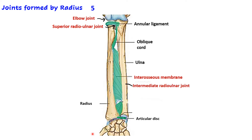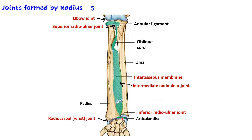The superior radio-ulnar joint is a pivot type of joint. Second is the intermediate radio-ulnar joint, which is a fibrous type — a syndesmosis — where the radius is connected to the ulna via the interosseous membrane. This is the only fibrous joint in the upper limb. Third is the inferior radio-ulnar joint, where the head of the ulna articulates with the lower end of the radius — also a pivot joint. The fifth joint is the radiocarpal or wrist joint, between the inferior surface of the radius and the two carpal bones, scaphoid and lunate — an ellipsoid type of joint.